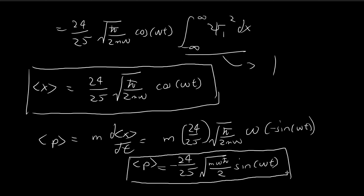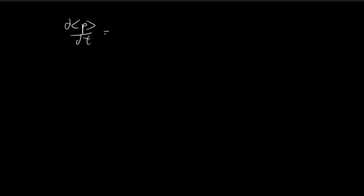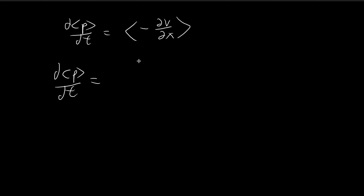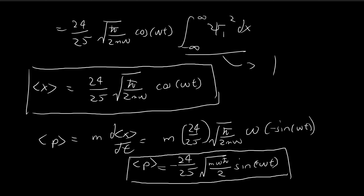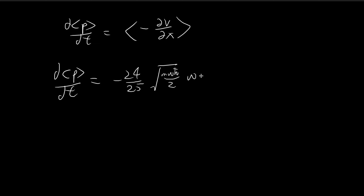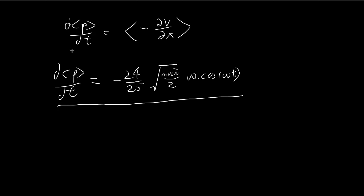With these two answers we've essentially finished the main calculations for part c. But we're also asked to verify Ehrenfest's theorem for the harmonic oscillator. Taking the derivative of ⟨p⟩, we retain all the constants — mωℏ/2 — and differentiate sine ωt, which gives an extra ω from the chain rule, and sine becomes cosine ωt. This is the left-hand side.